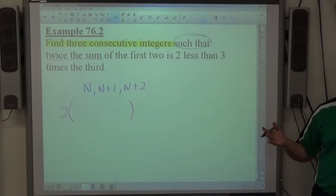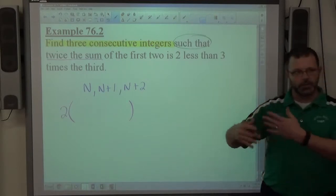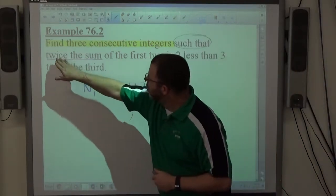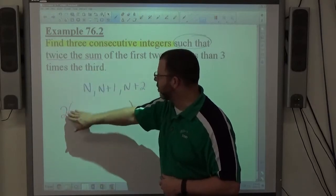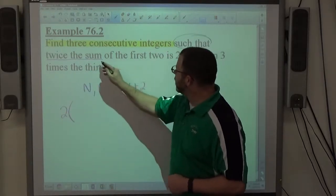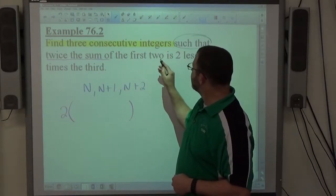Again, with word problems, they're not going to say, oh, by the way, use parentheses here. They're going to use words that are going to imply parentheses. So to multiply by a sum or difference requires parentheses. And then sum of, right? And then the first two.